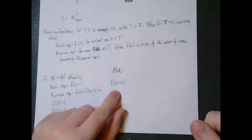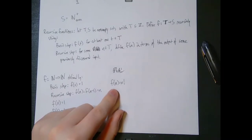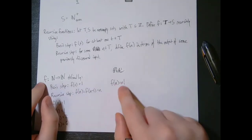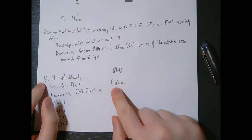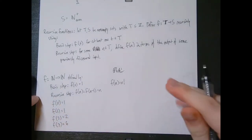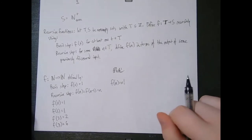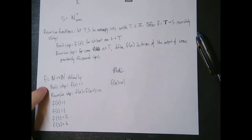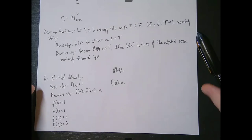Here we have F going from the natural numbers to the natural numbers, defined by the basis step F of 0 equals 1, and the recursive step F of n equals F of n minus 1 times n. F of 0 equals 1, F of 1 equals 1, F of 2 equals 2 times 1 which is 2, F of 3 equals 3 times 2 which is 6, and so on. This is a recursive way of defining the factorial function, so F of n equals n factorial.